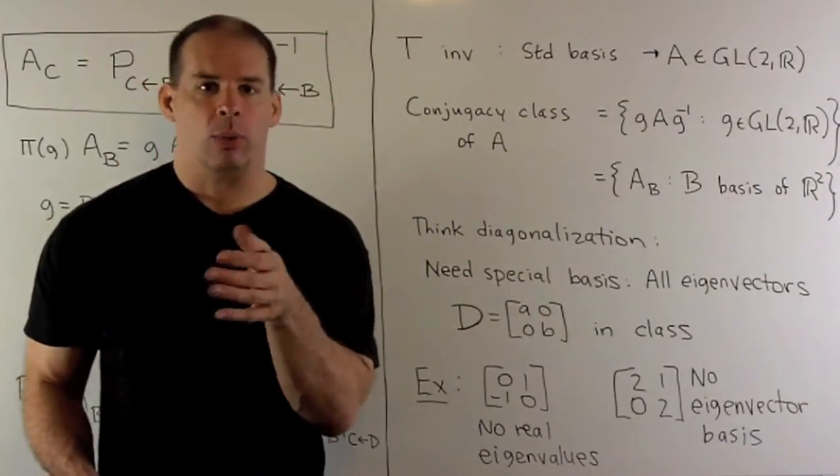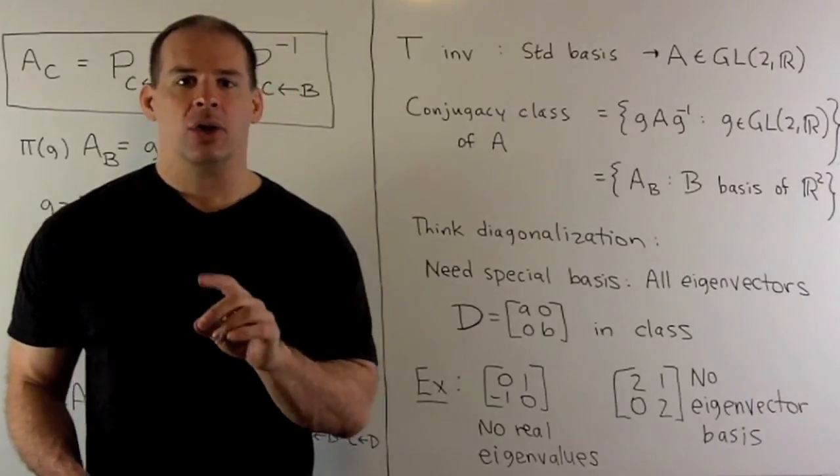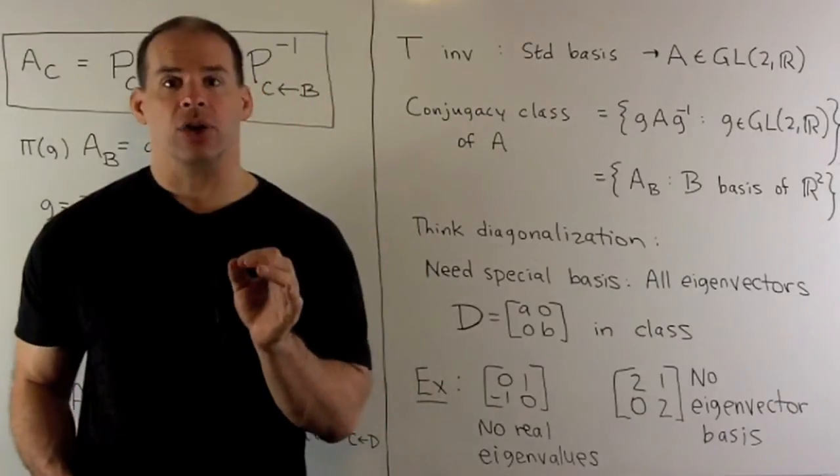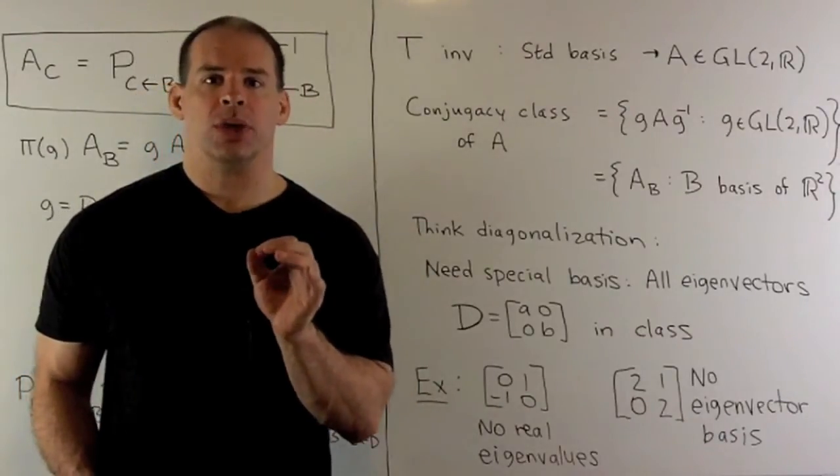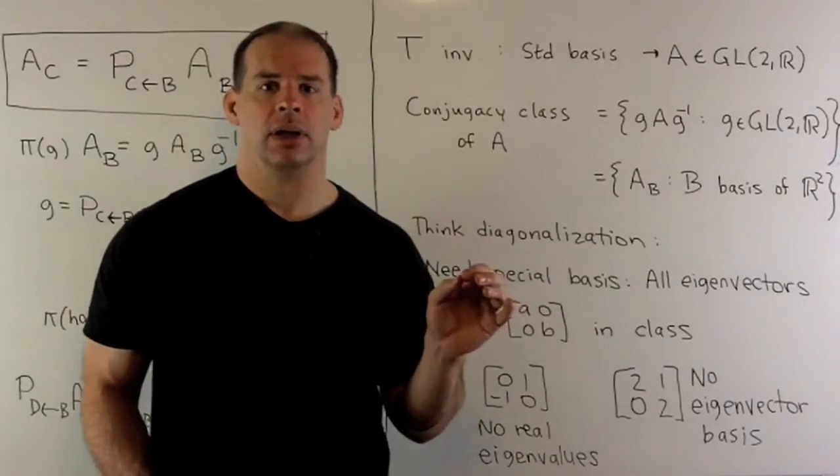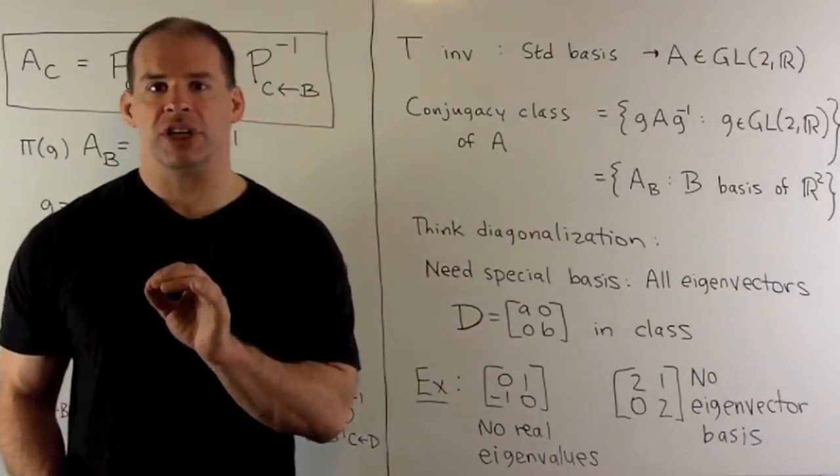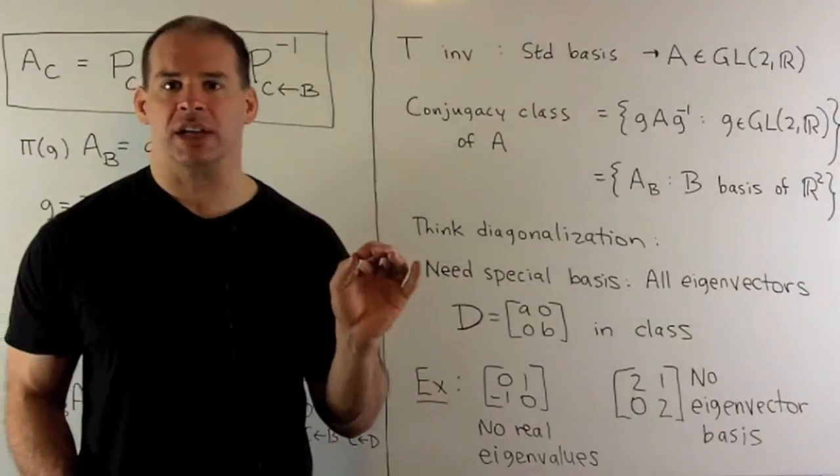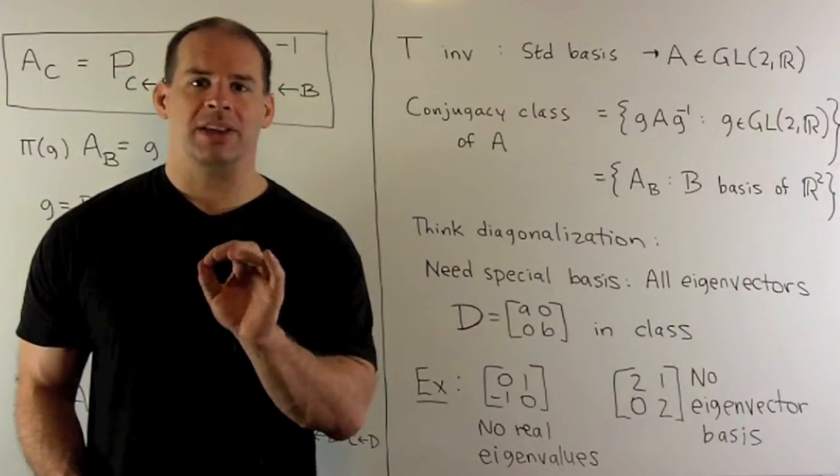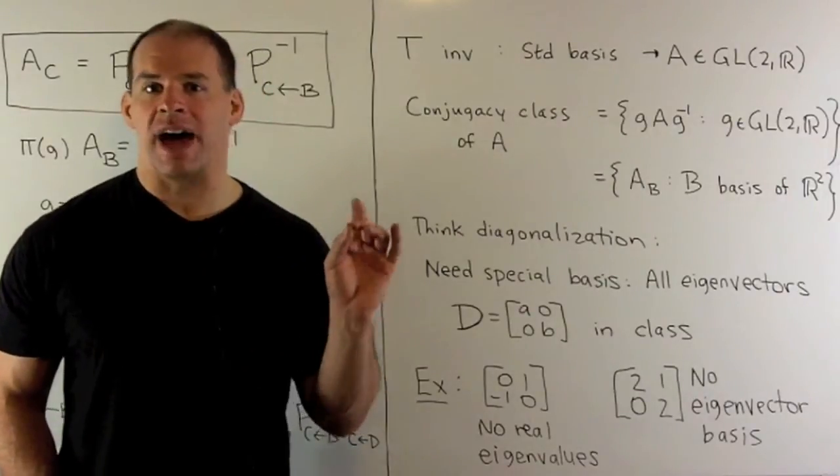We go through them one by one until we find a basis that returns an A_B that's diagonal. So that's what we're doing when we change basis to get diagonal form. Now, if we do it the way I just stated, it's horribly inefficient and probably an impossible project. So, we have a recipe that gets us right to that basis. That's going to be to look for a basis of eigenvectors.